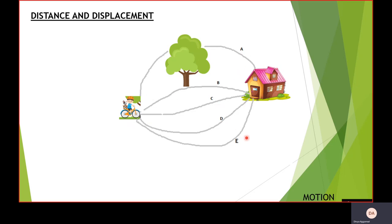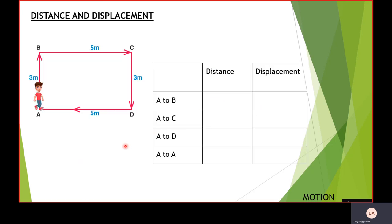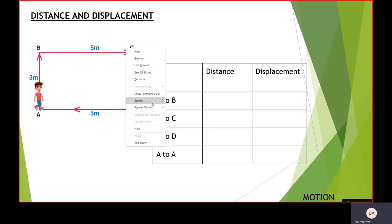Paths A, B, C, D, and E will give us the distance. Since he can travel through different ways from his initial to the final position, all of these will individually give us the distance. Distance is the complete path traveled by an object, and displacement is the shortest distance measured from the initial to the final position of an object, which is path C here.